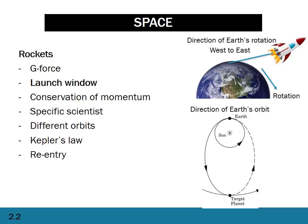Now let's look at launch window. There are two key things to keep in mind. First, direction of the earth's rotation — you want to shoot the rocket in the same direction as the earth's rotation to gain that extra speed. You also want to think about where the earth is in its orbit around the sun so that when the rocket launches it can best hit the target planet.